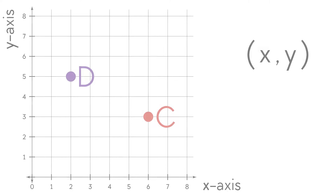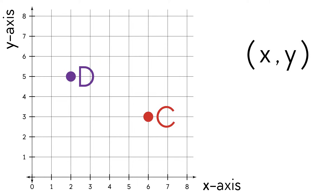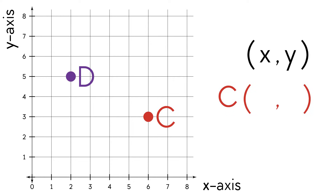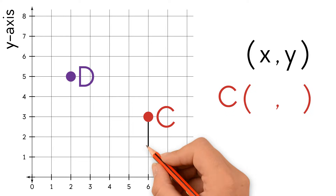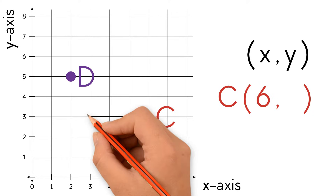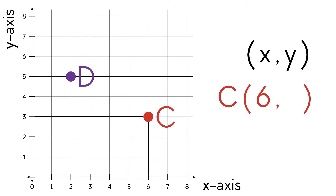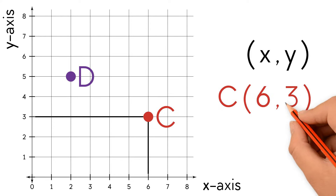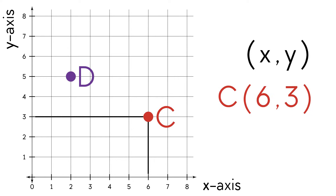Let's do some more examples. Find the ordered pair for C. First, we find the x-coordinate. We look down to the x-axis and we see that the x-coordinate is 6. Now we find the y-coordinate by looking to the left at the y-axis. We see that the y-coordinate is 3. So the ordered pair for C is (6, 3).